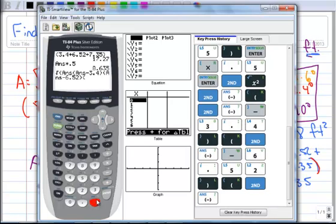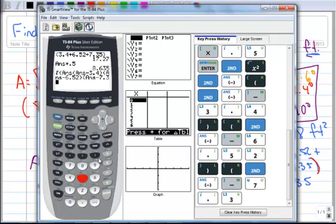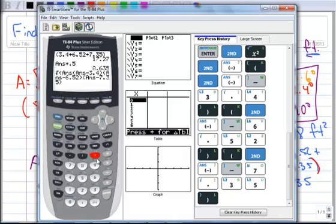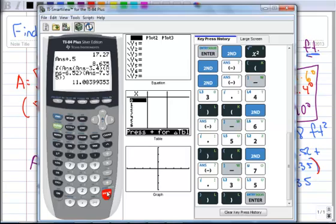Second answer, minus, what was the next one? 7.35. Enter. And do I have them all? I think so. One more parenthesis. And 11.08. Yay! So that worked.